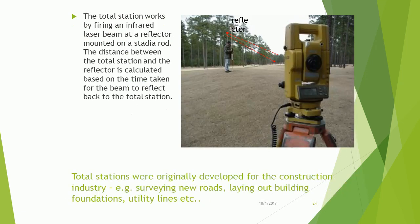The total station works by firing an infrared laser beam at a reflector mounted on a stadia rod. The distance between the total station and the reflector is calculated based on the time taken for the beam to reflect back to the total station.